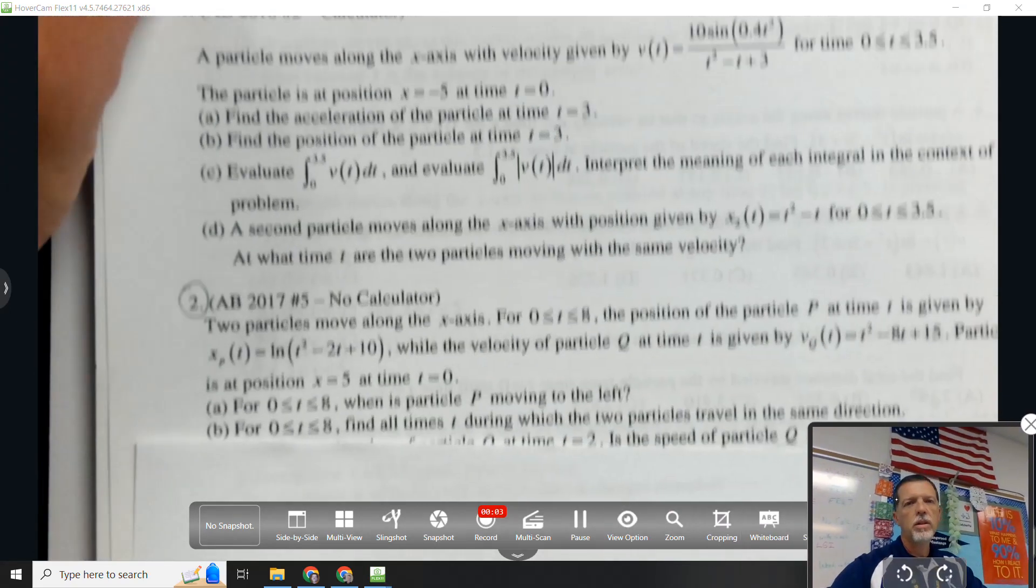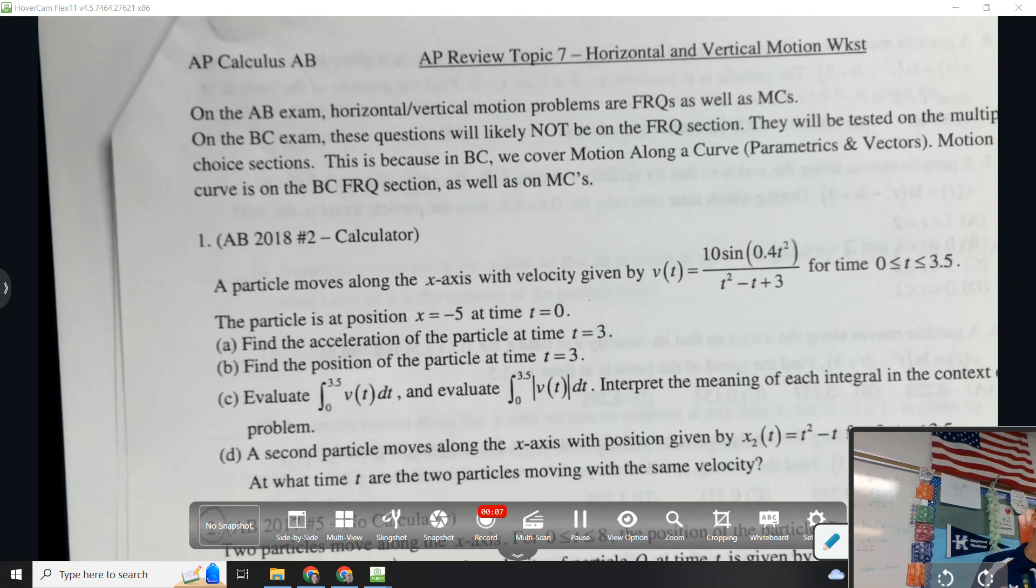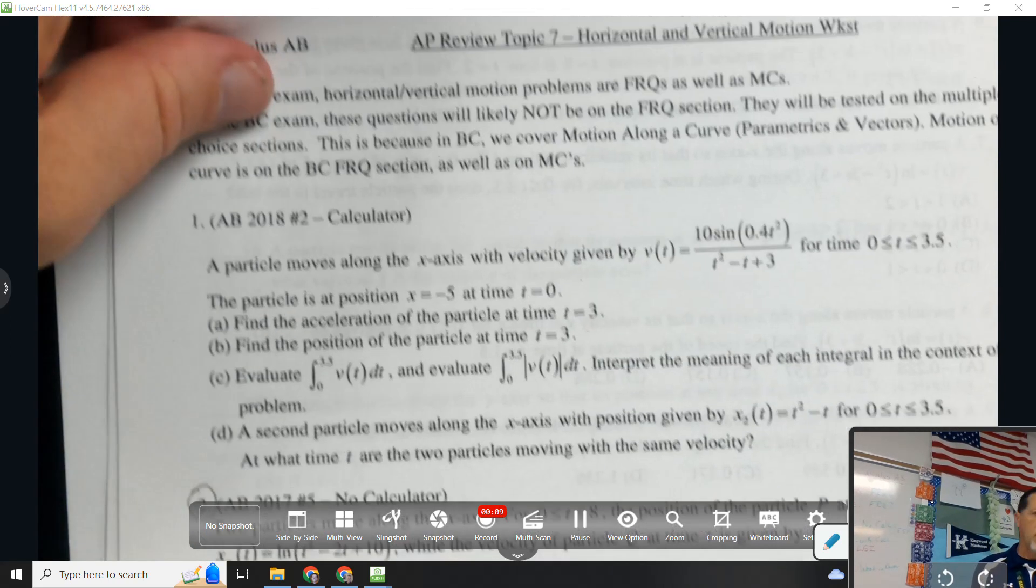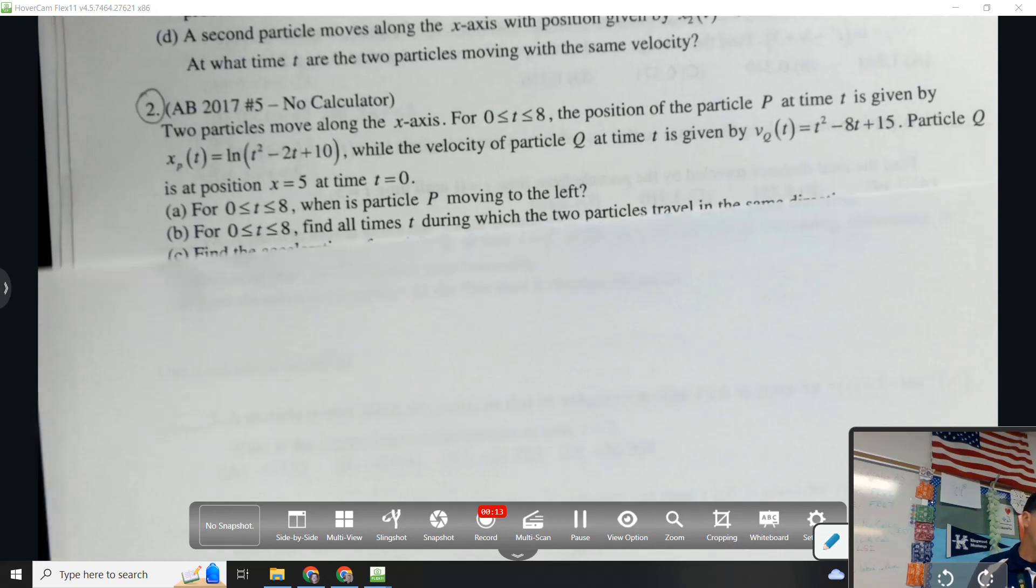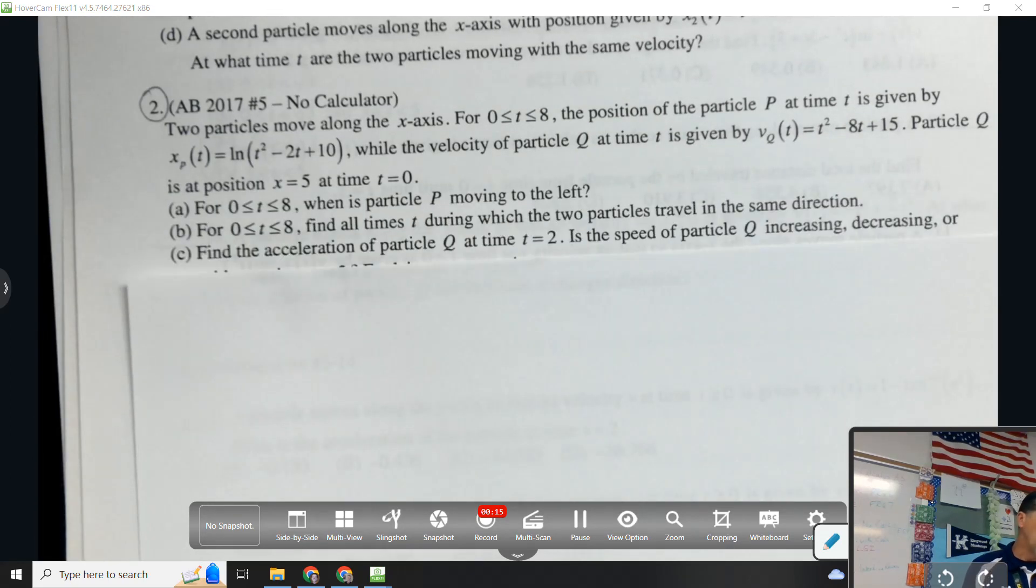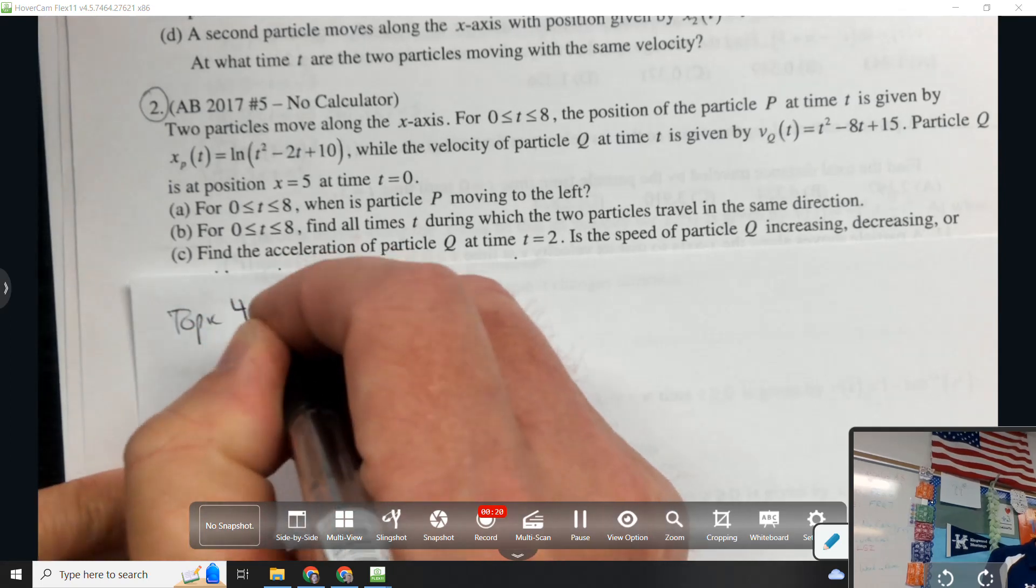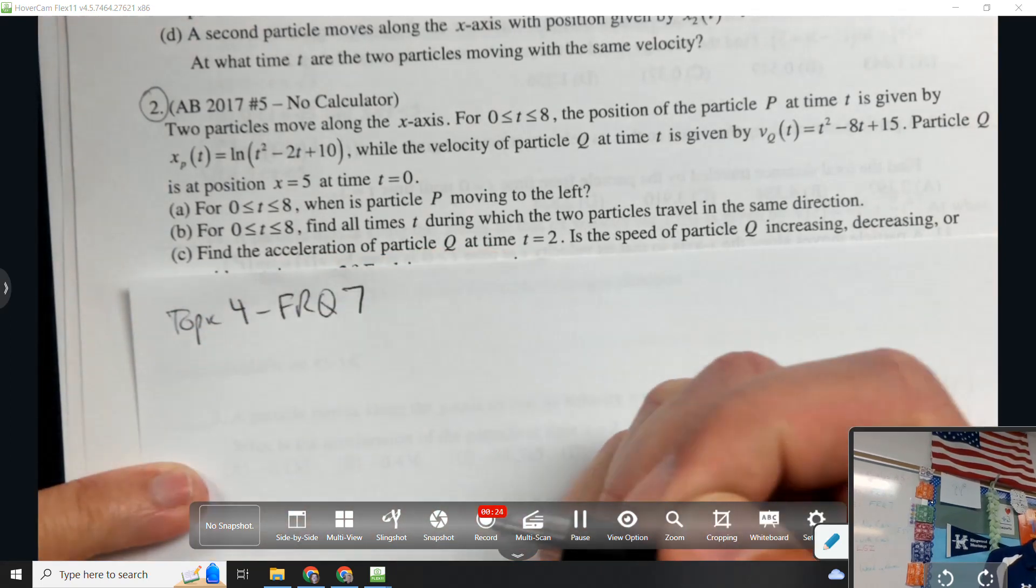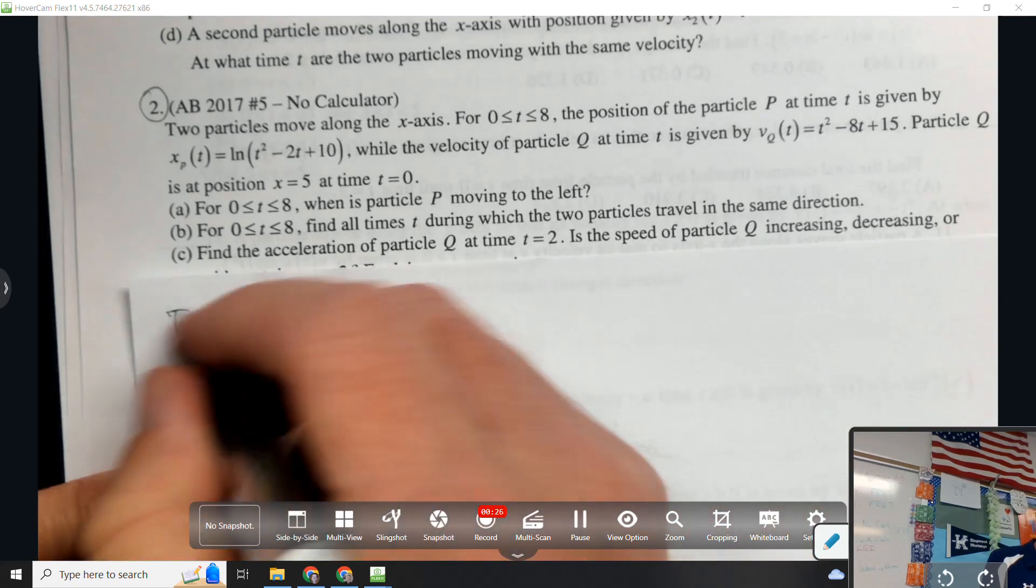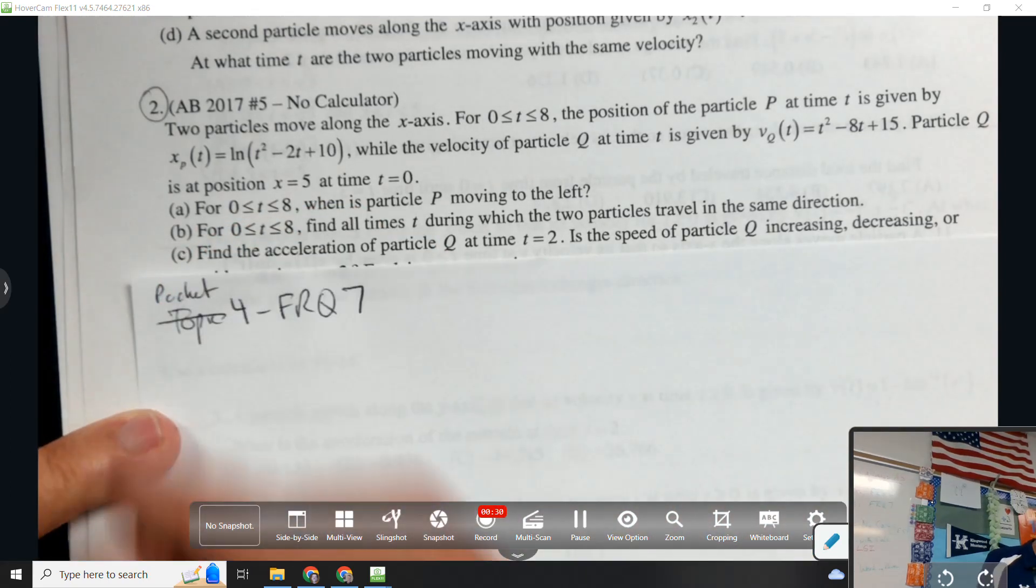So, packet 4, this is the second worksheet in there, topic 7, horizontal and vertical motion. Again, number 1 is easier, so let's do number 2. Two particles move along the x-axis. Topic 7 on packet 4, excuse me. And this is number 2.